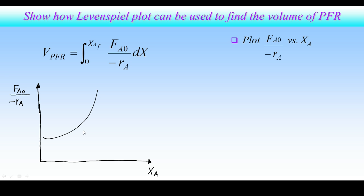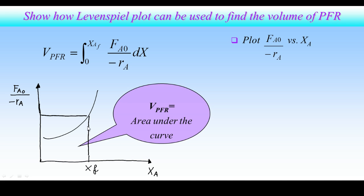For the desired conversion, XA final, and the corresponding reaction rate, the necessary volume of the PFR will be area under the curve. We also should not forget that this is valid for isothermal systems, where the rate constant remains constant.